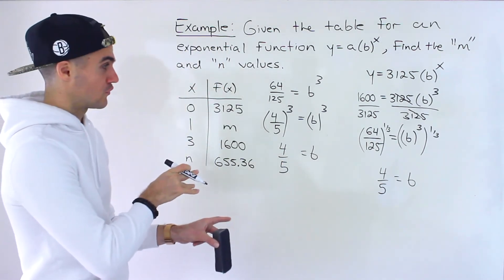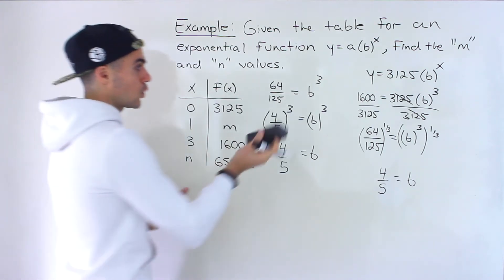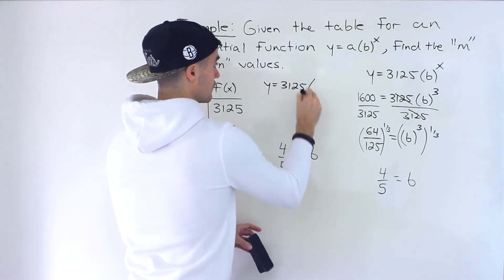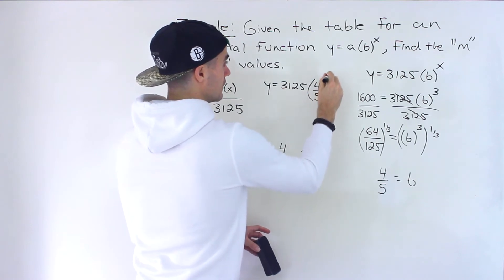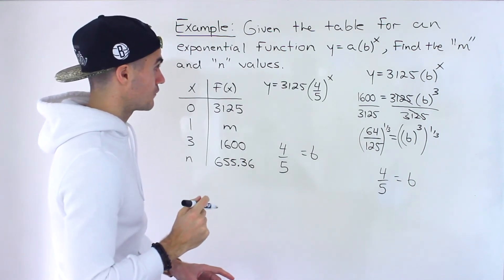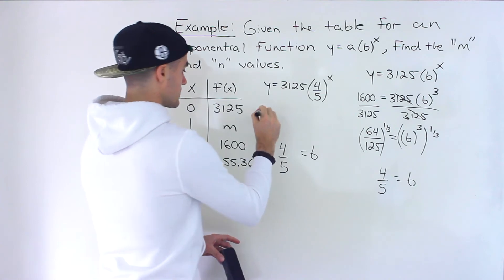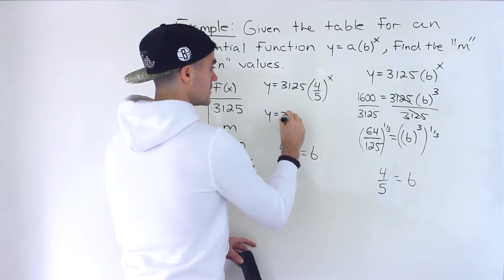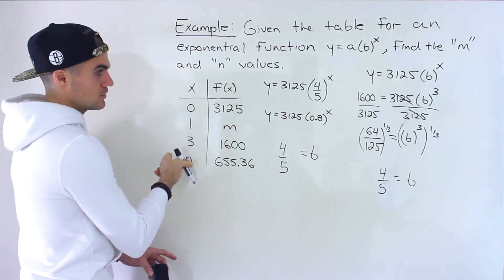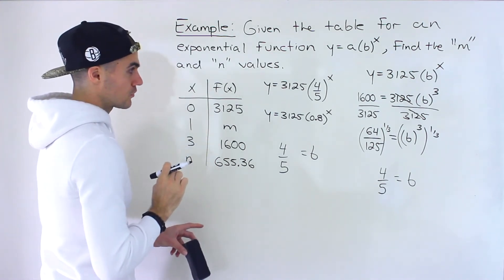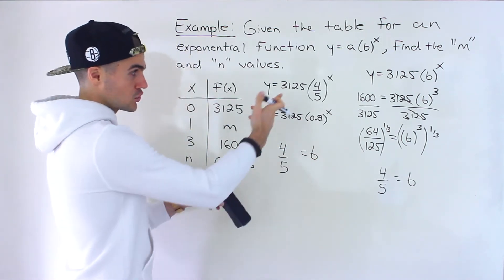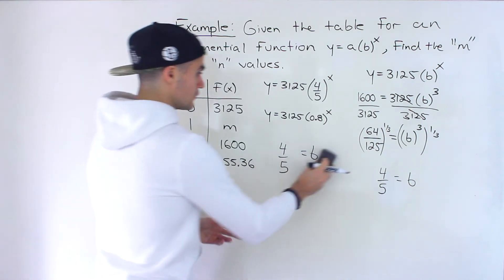So whichever way you do it, 4 over 5 ends up being the b value. So the final equation ends up being y equals 3,125, 4 over 5 to the power of x. Or you could change this to a decimal as well, 0.8 to the power of x. Actually, you know what? Let's work with decimals. It doesn't matter, but I feel like when we're doing the algebra for finding this n value, it might be just a little less cluttered if we're using decimals. But you could use fractions as well. Just wherever I put this decimal in the algebra, make sure you're putting that fraction in brackets.